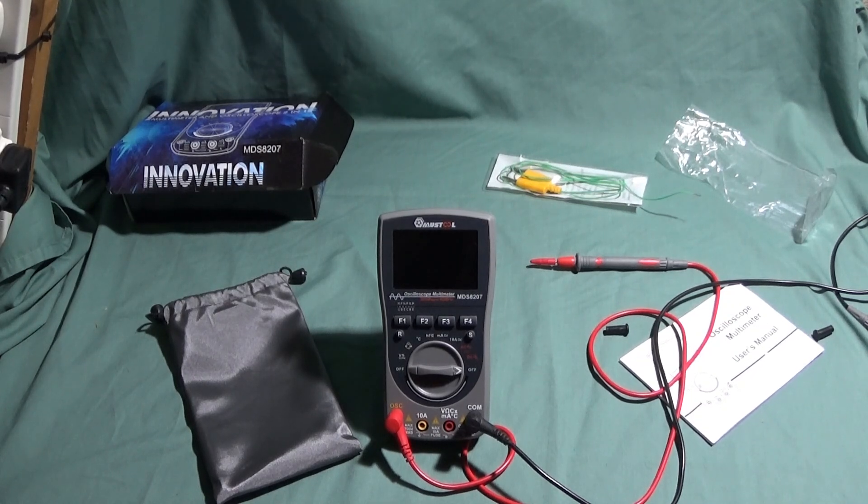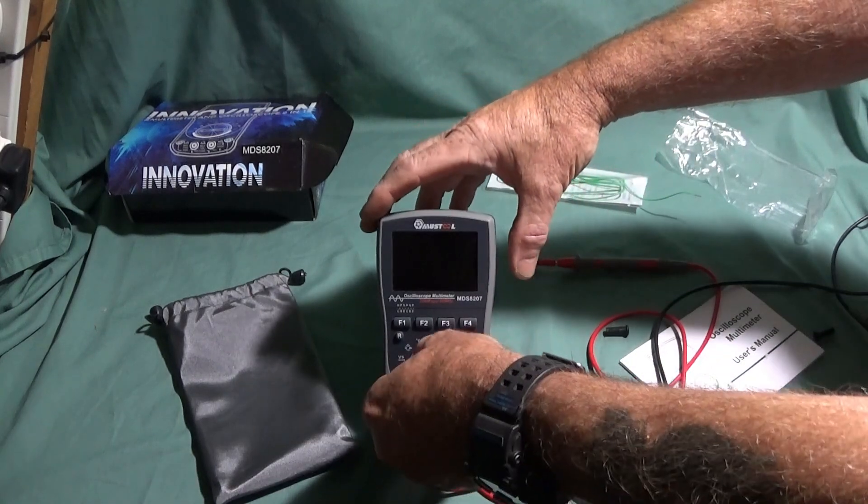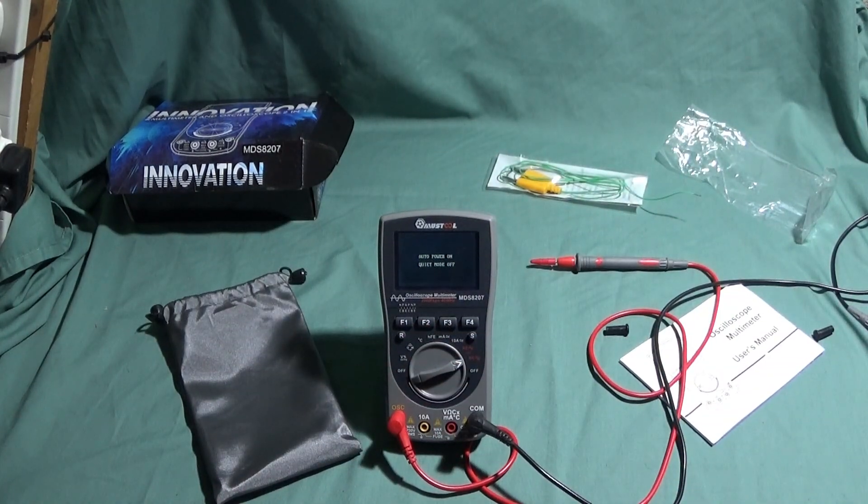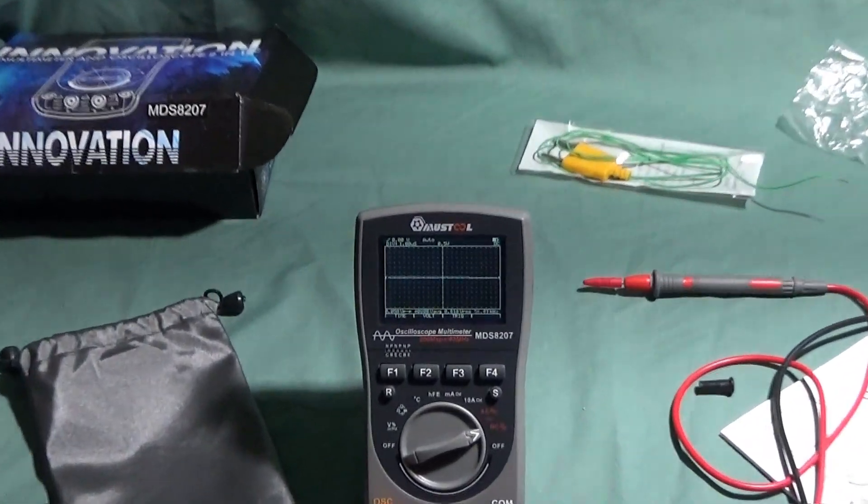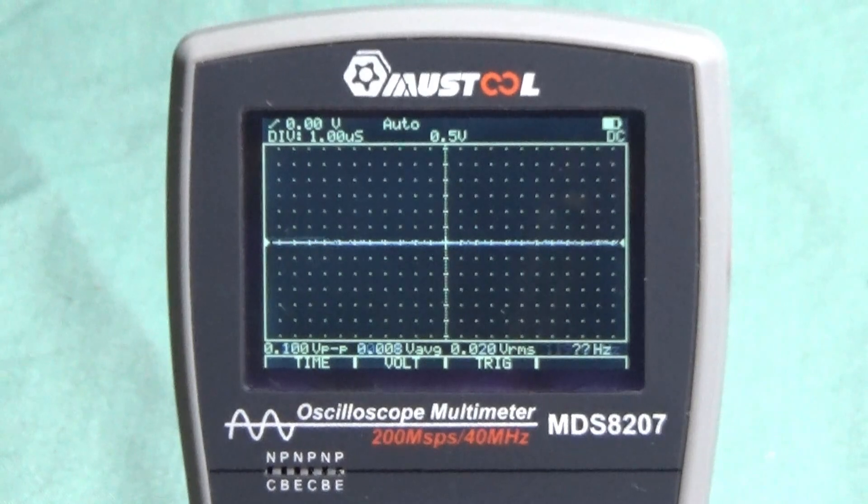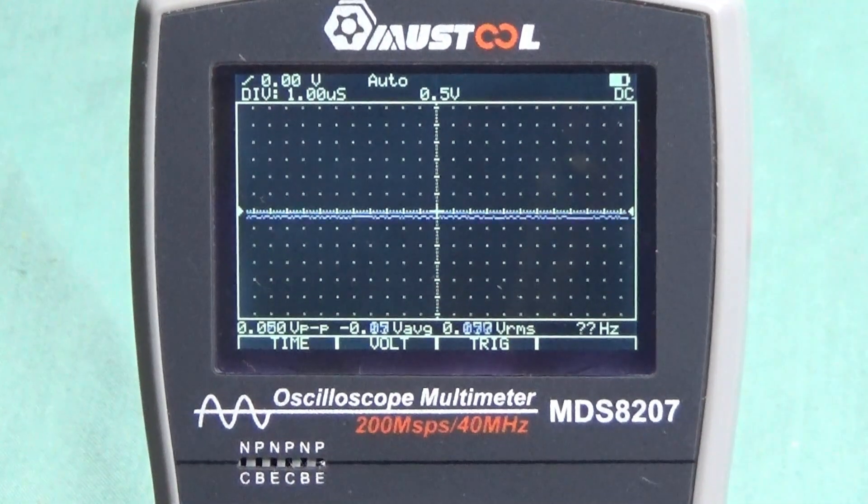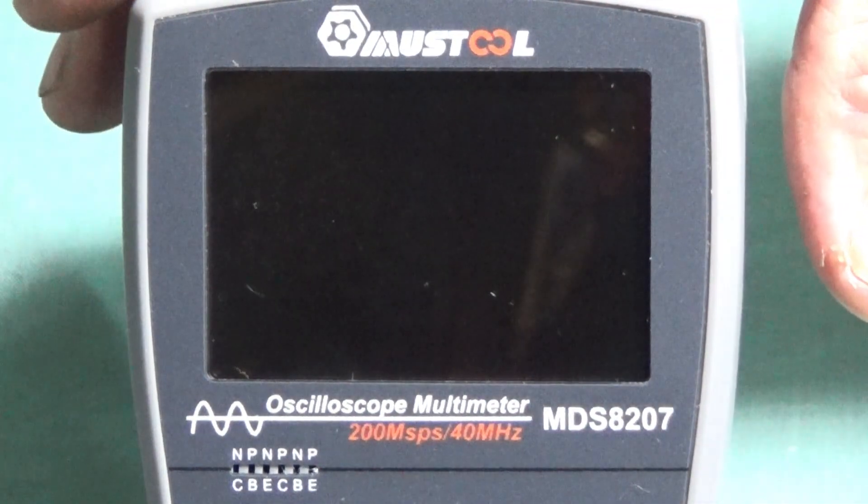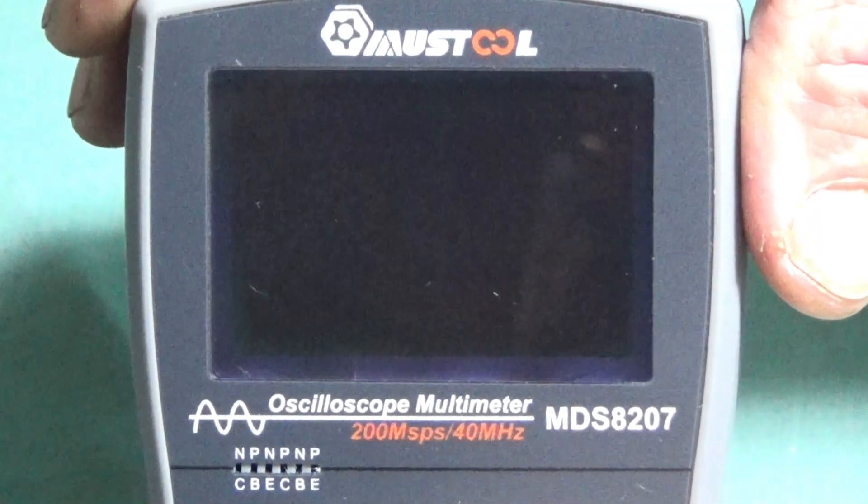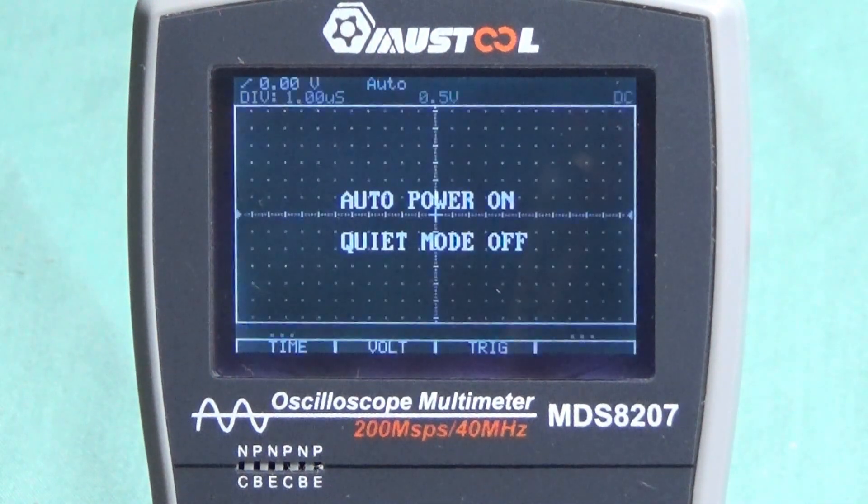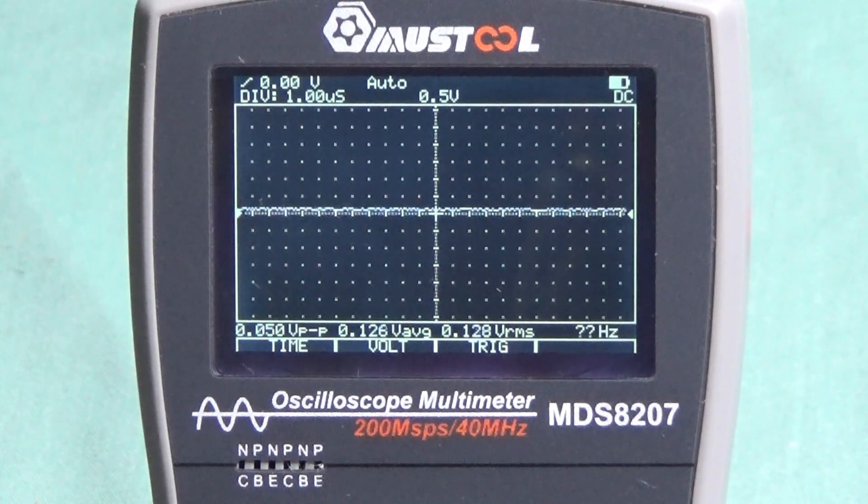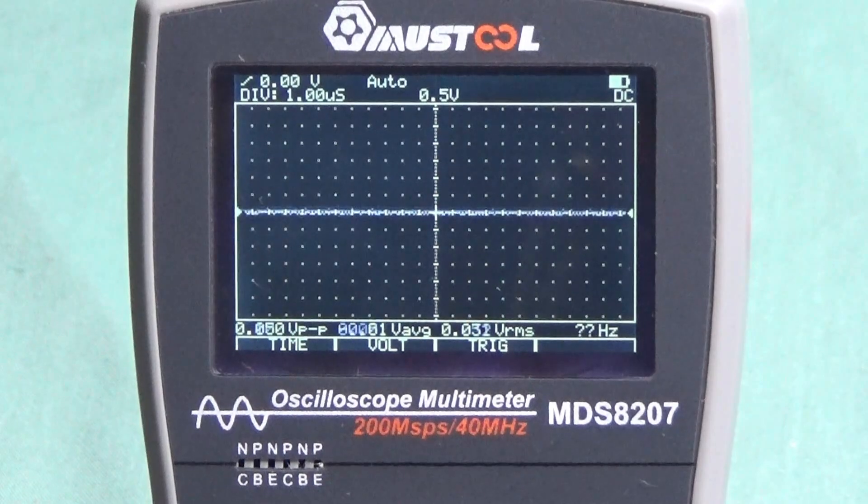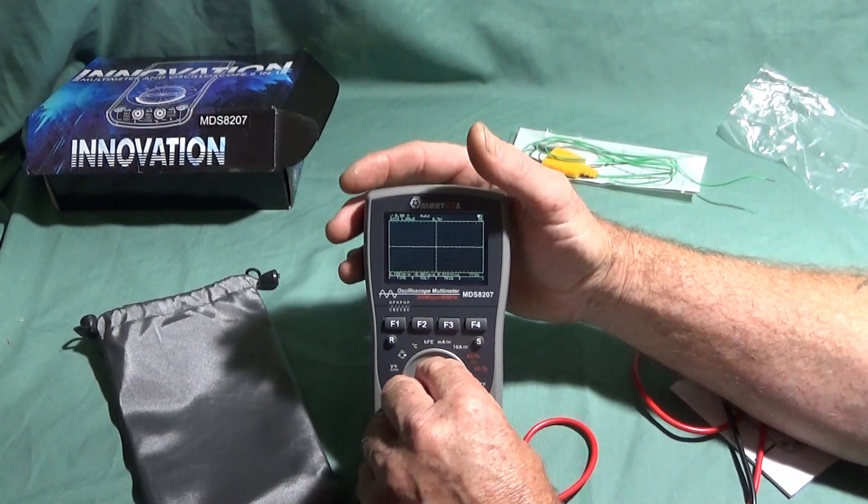Now I've just turned off a couple of my studio floodlights so you can see the screen. I've put it in the oscilloscope screen first, and now the actual multimeter functions.